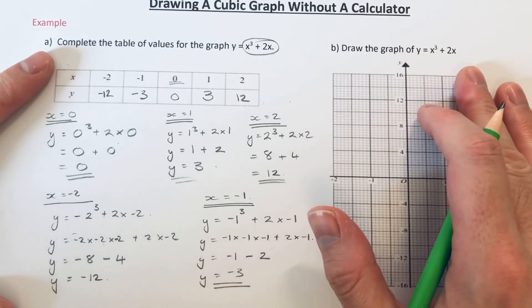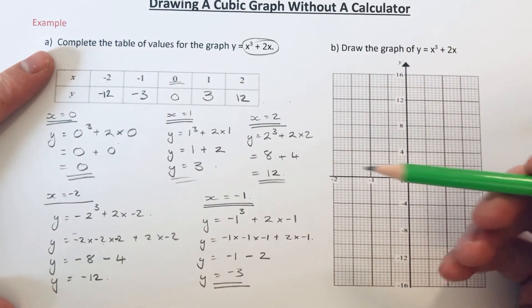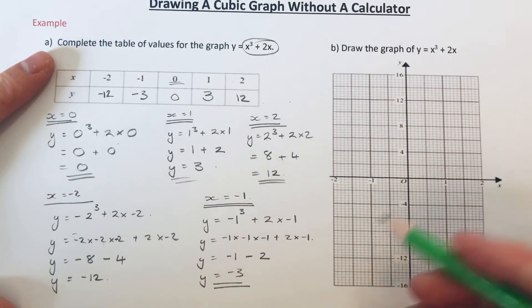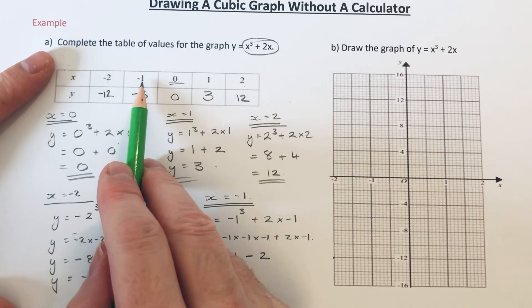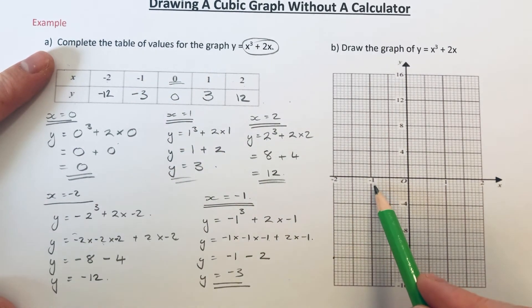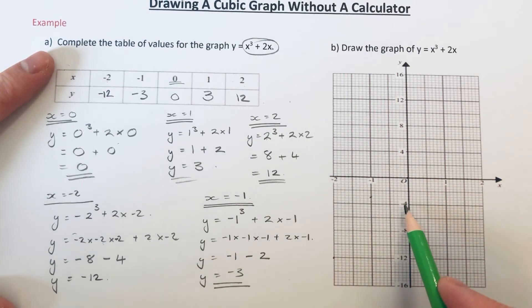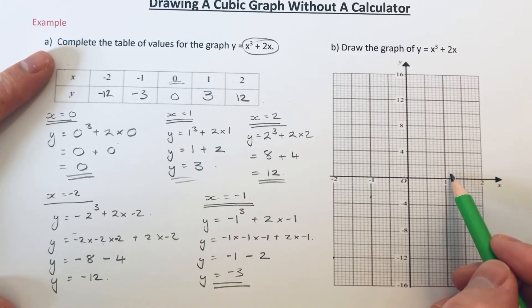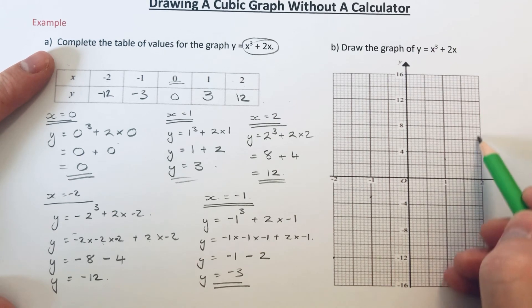And now we've just got to draw the graph out. So our first point was minus 2, minus 12. So minus 2, minus 12 is here. Our next point is minus 1 and minus 3. Our next point was 0, 0. Next one was 1, 3. And the final point was 2, 12.